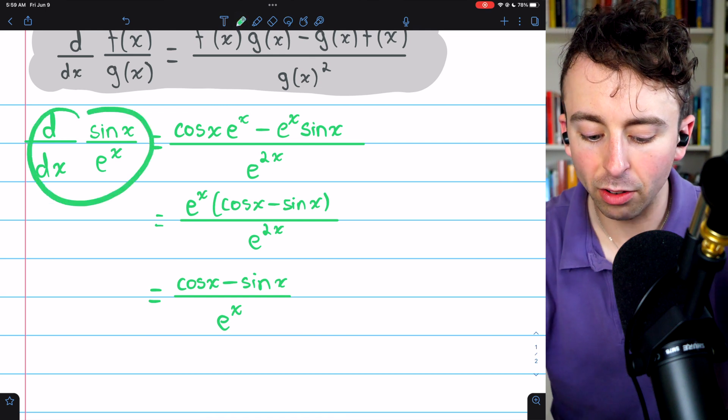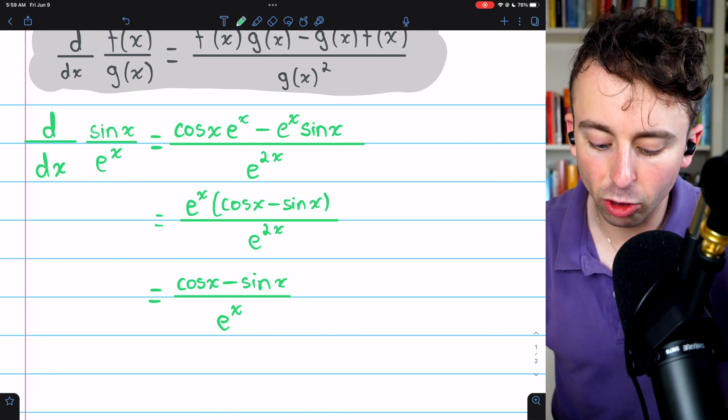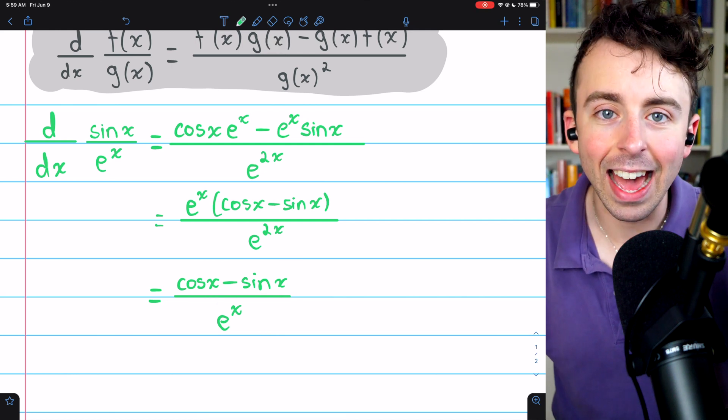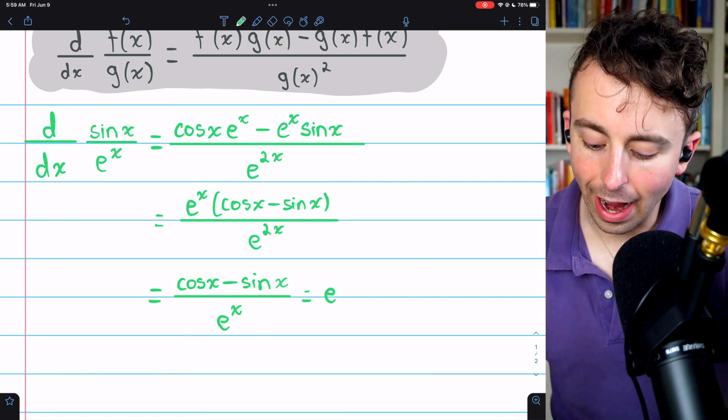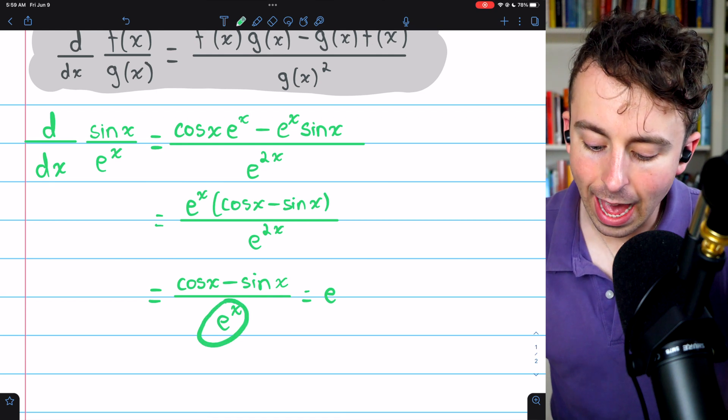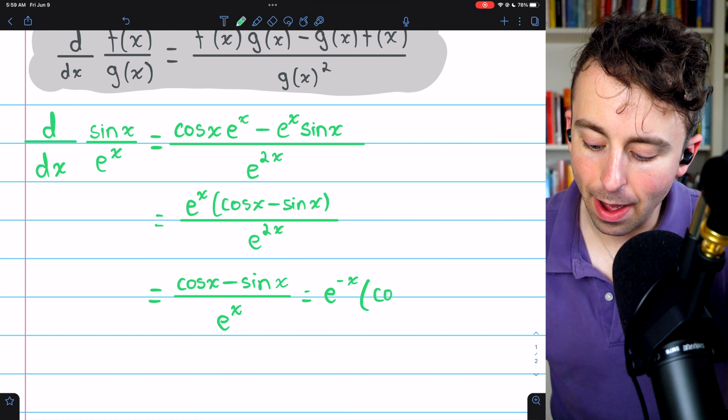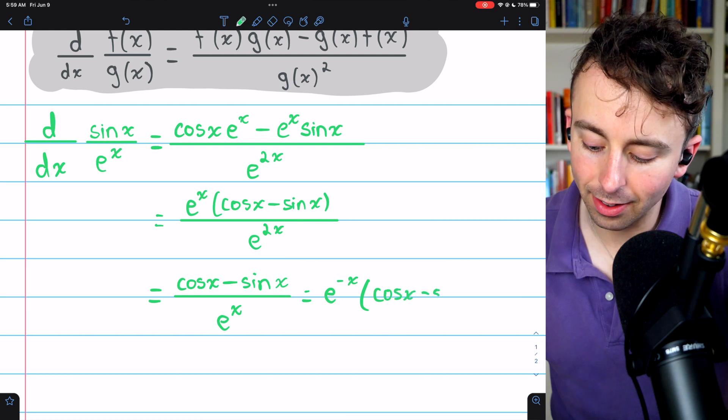And so we're left with this simplified expression. The derivative of sine x over e to the x is cosine x minus sine x divided by e to the x. And if you prefer to write that not as a fraction, you could bring the e to the x up as e to the negative x, and then just multiply that by cosine x minus sine x.